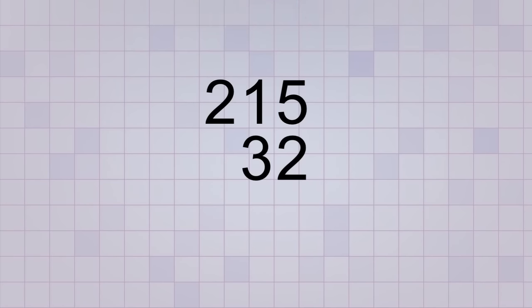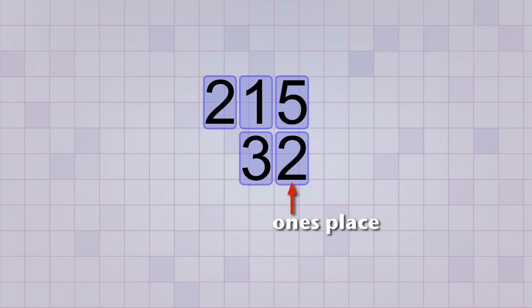But here's the most important part. Be sure to line up the number places so that they're directly over each other, so that the ones place of the number on top is directly over the ones place of the number beneath it. And if you line up the ones place correctly, then all the other number places will be lined up too.